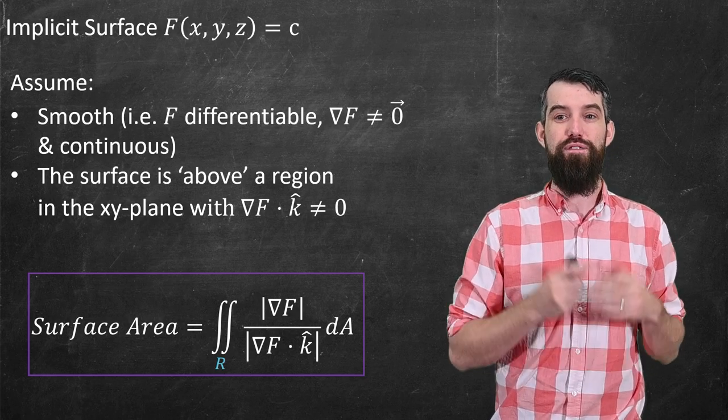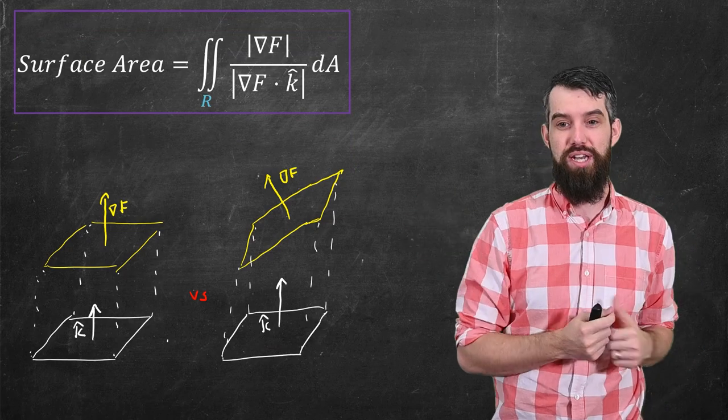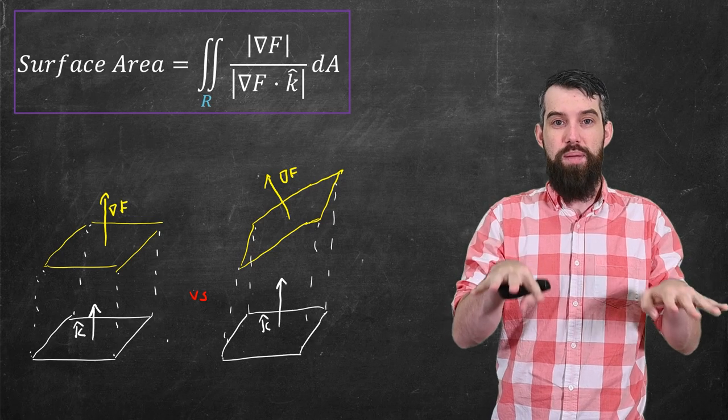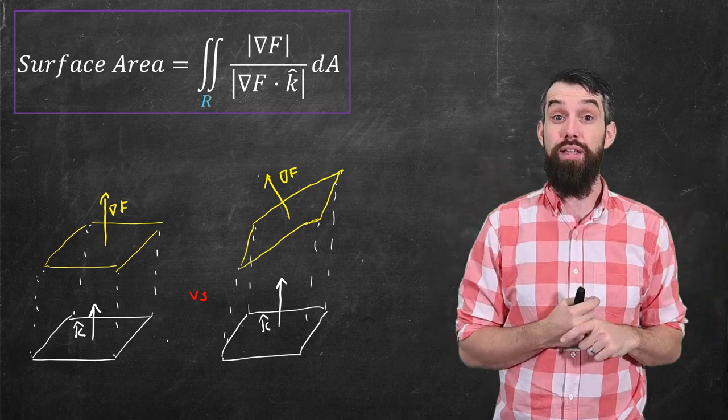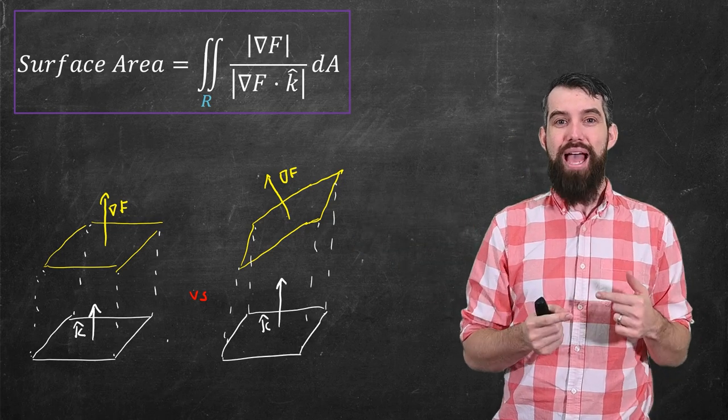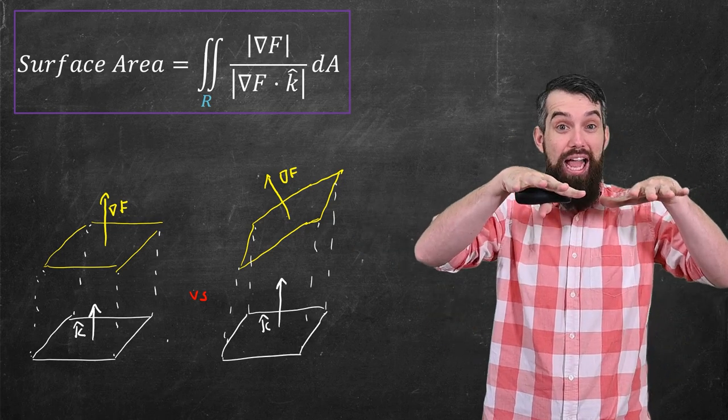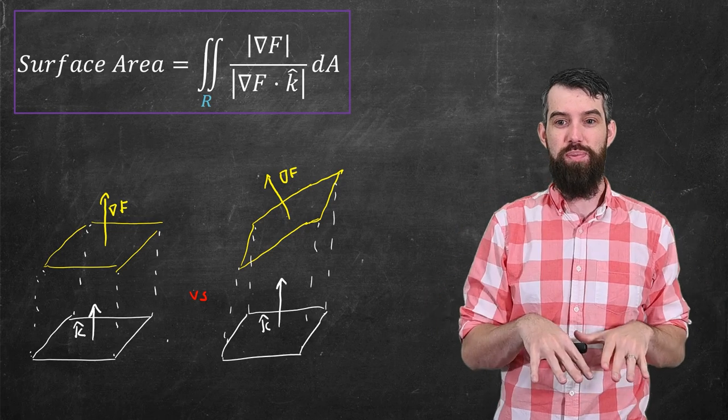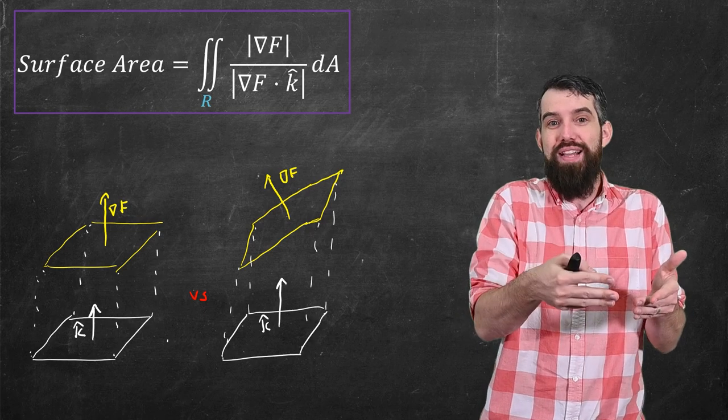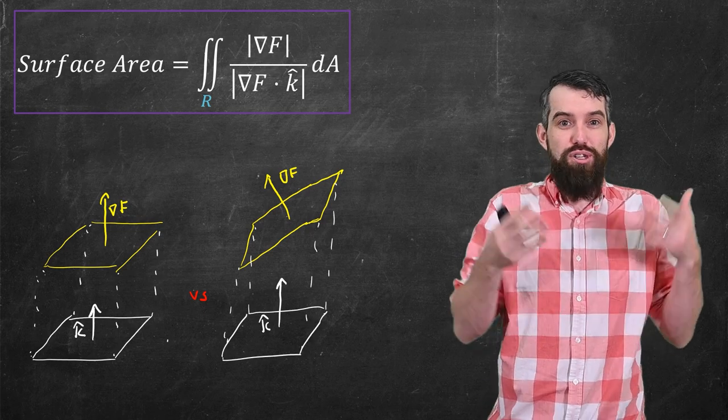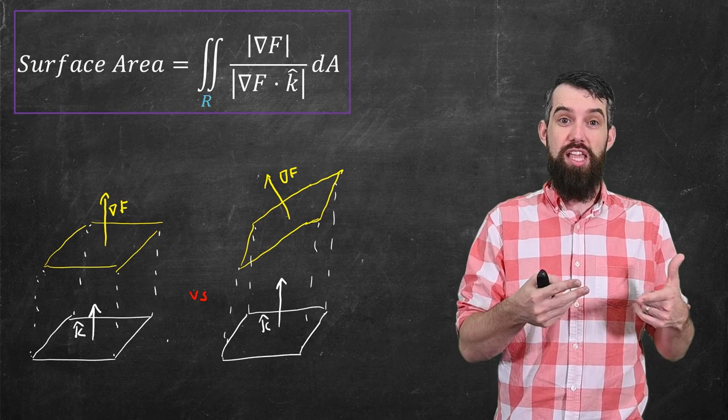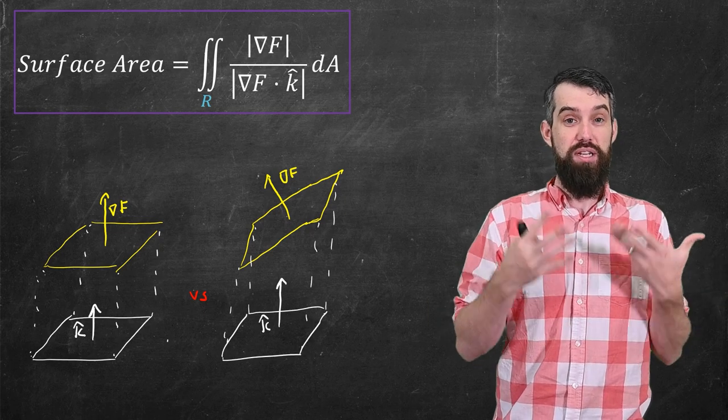So one thing I want to focus in on is a contrast between two different scenarios. So in both scenarios I have a square down in the xy plane, and then I have a surface that's living above it. Well on the far left I'm imagining that my surface is completely flat directly above the portion on the xy plane. So in this case the length of the gradient of F and the portion of the gradient of F that's in the k hat direction, those are just the same. And so this integrand is just one, and integrating out the area along the base is going to give you the surface area.